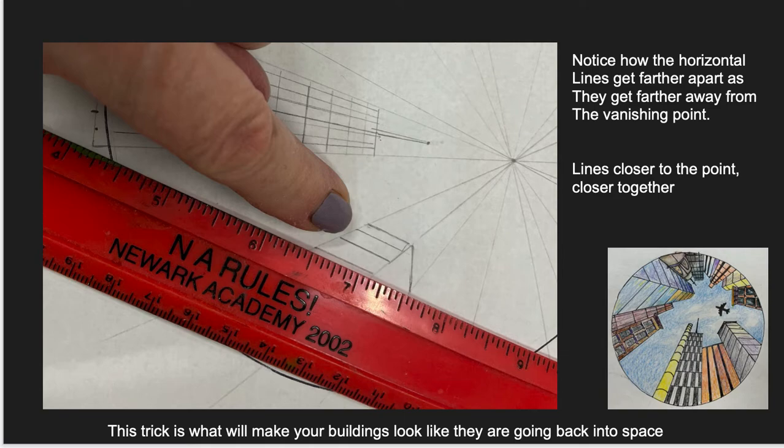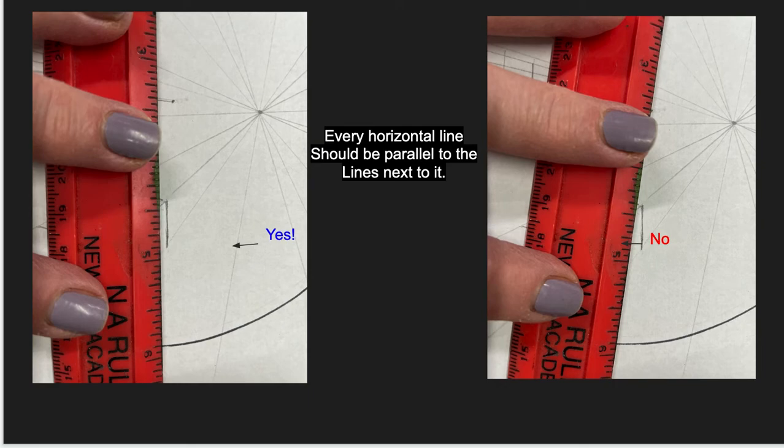When you go to draw in your window panes, it's important to know that you want to get lines closer to each other as they go toward the vanishing point, and they go farther away from each other as you go out to the exterior of your circle, which is farther away from the vanishing point. This is what gives you a sense that the buildings are stretching up away from you. The other thing that's important is that as you put in those window lines that go across the building, that you keep them absolutely parallel to each other.